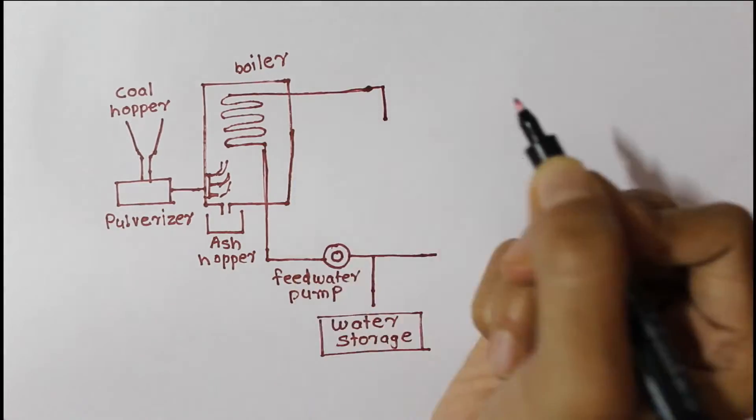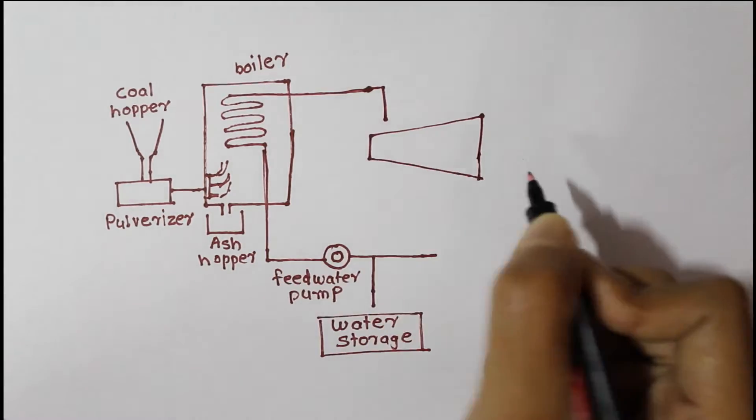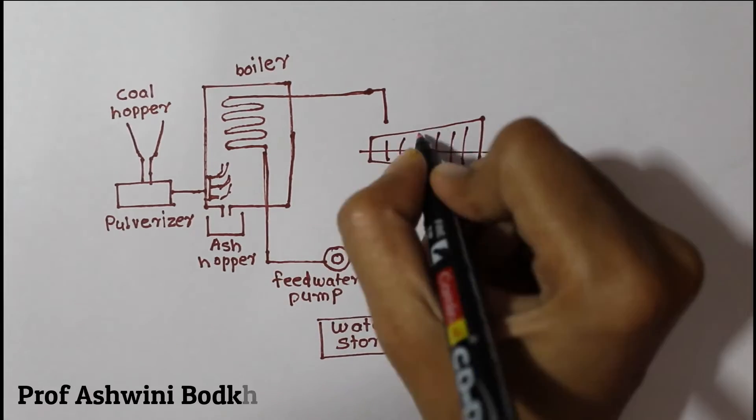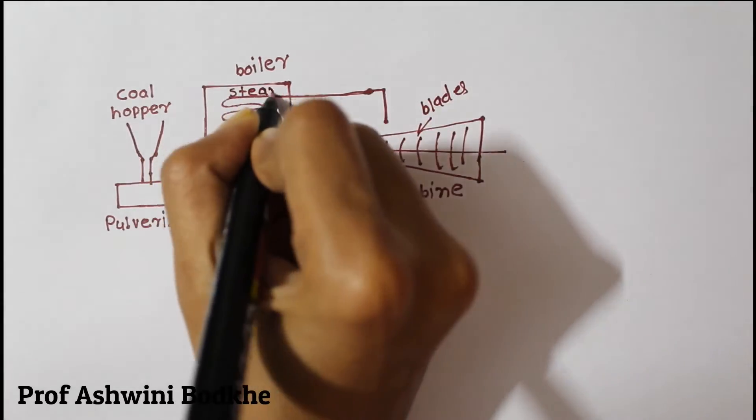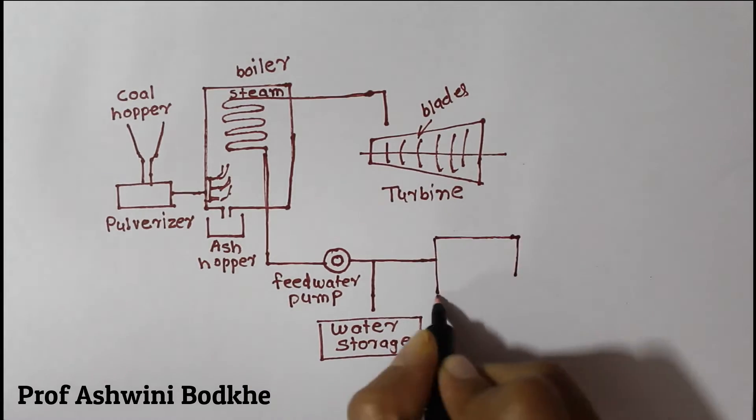Coal is burned in boiler. And next here is turbines. Turbine blades attach in turbines.